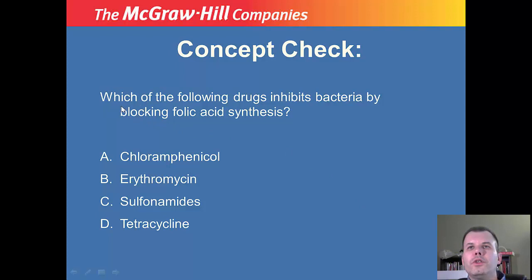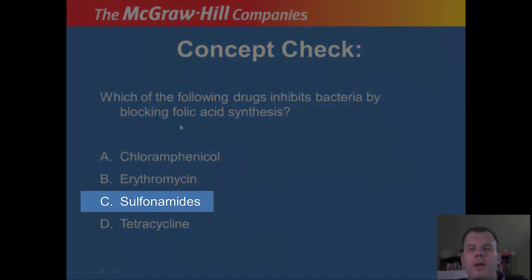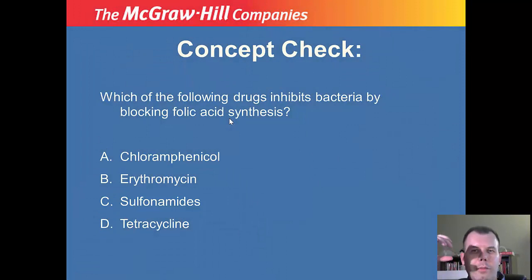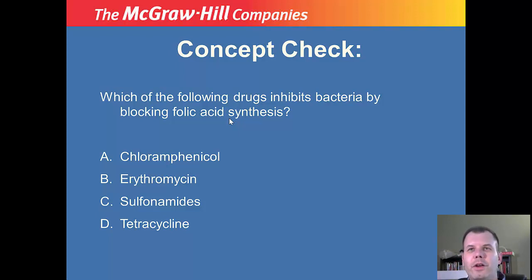Another concept check: which drug inhibits bacteria by blocking folic acid synthesis - chloramphenicol, erythromycin, sulfonamides, or tetracycline? If you think of the sulfa drugs or sulfonamides - this blocks folic acid. The sulfonamides have the same structure as PABA, which fits into the enzyme with competitive inhibition and stops production. Bacteria also figure out a way to get around that eventually, which we'll look at when we discuss resistance. If you said sulfonamides, good job.